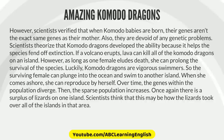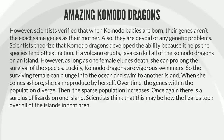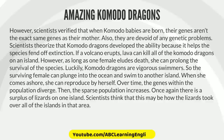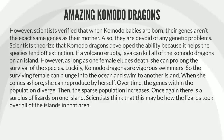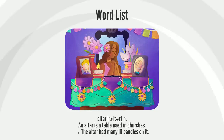If a volcano erupts, lava can kill all of the Komodo dragons on an island. However, as long as one female eludes death, she can prolong the survival of the species. Luckily, Komodo dragons are vigorous swimmers. So, the surviving female can plunge into the ocean and swim to another island. When she comes ashore, she can reproduce by herself. Over time, the genes within the population diverge. Then, the sparse population increases. Once again, there is a surplus of lizards on one island. Scientists think that this may be how the lizards took over all of the islands in that area.